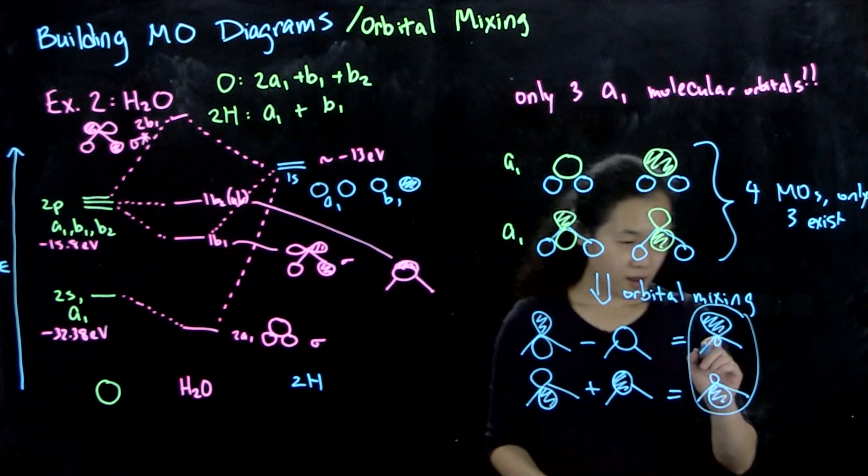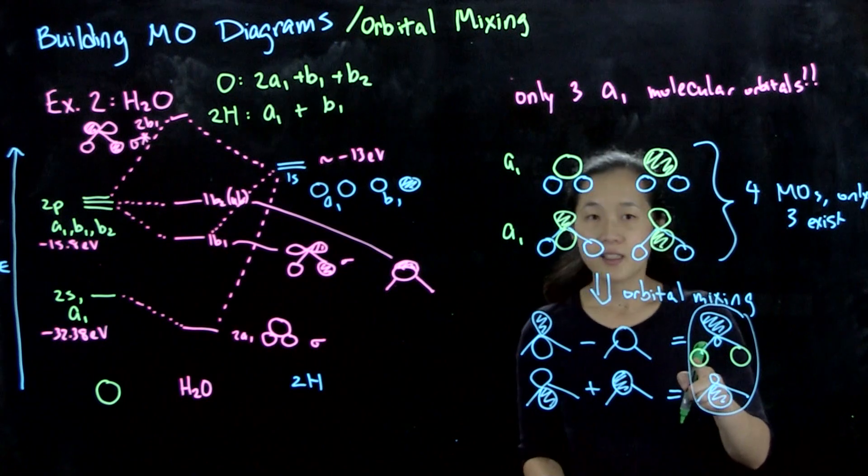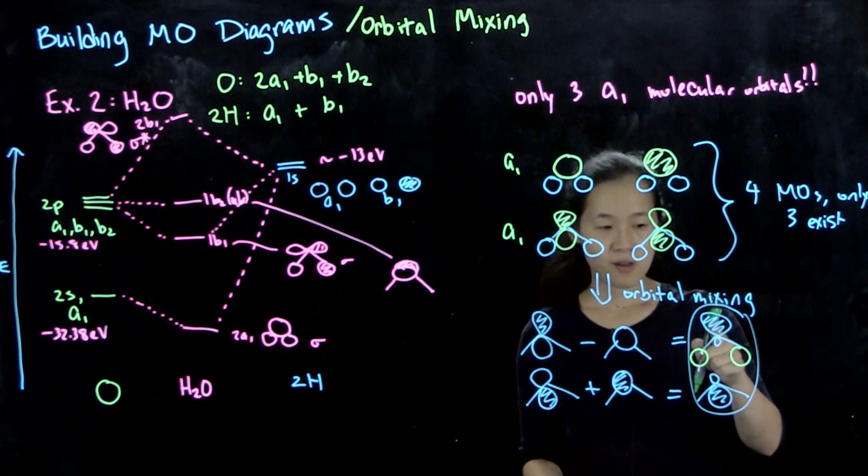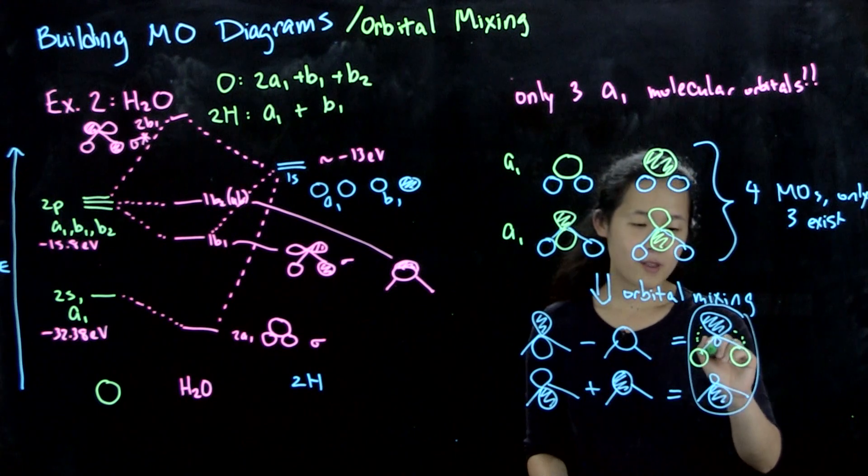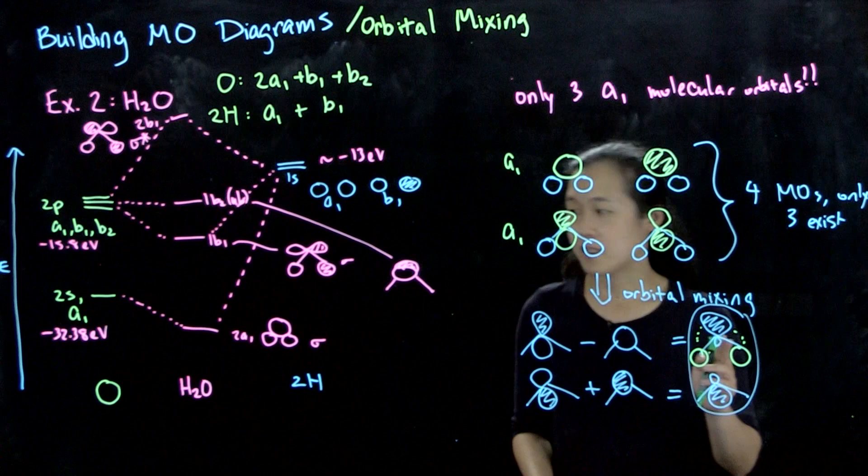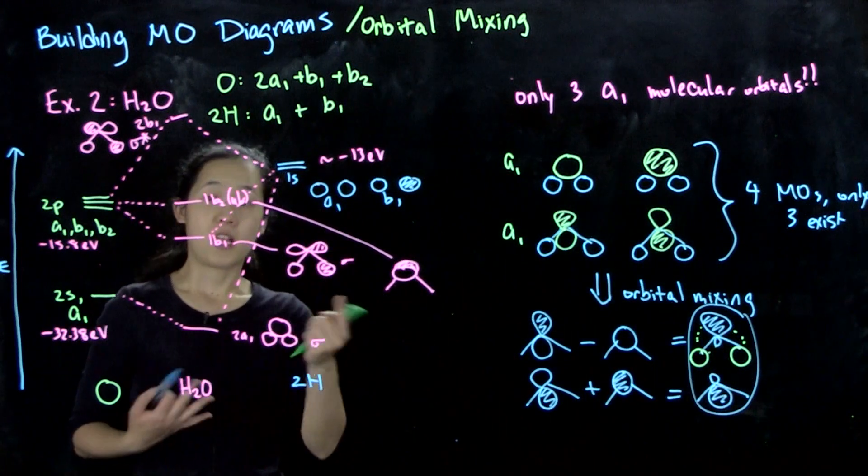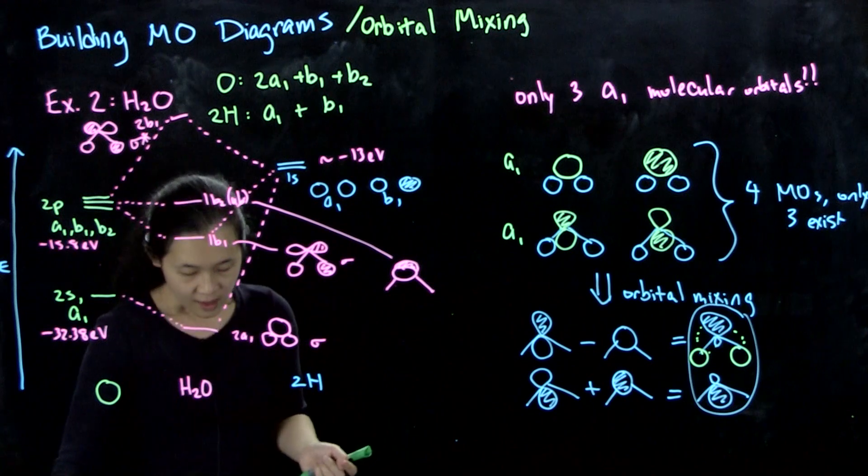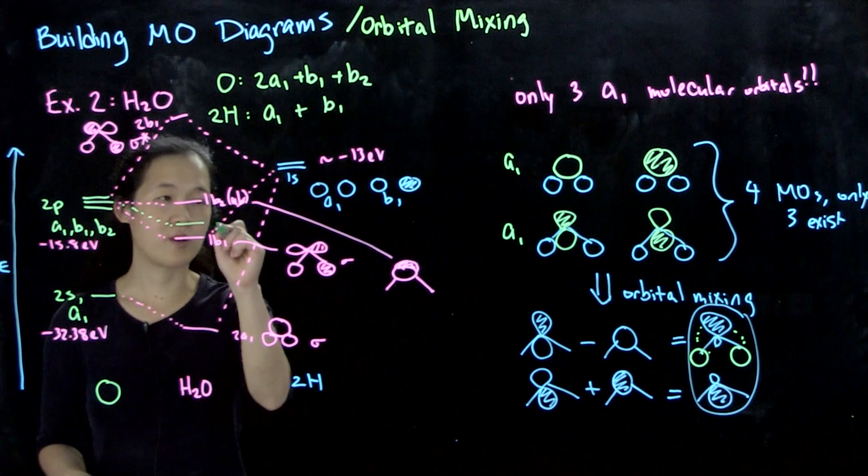If we start to draw our green orbital, our a1 SALC here, this is sort of anti-bonding with the s because we have this anti-bonding interaction, but sort of bonding with the pz because of this tiny lobe here. It's not as stable as this one, but it's also not fully anti-bonding. This is kind of our intermediate a1. We'll call this our 3a1.